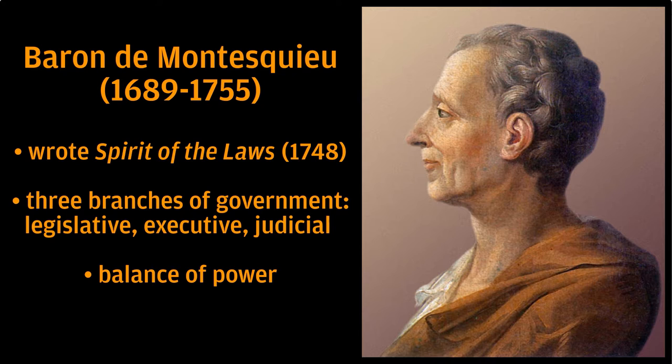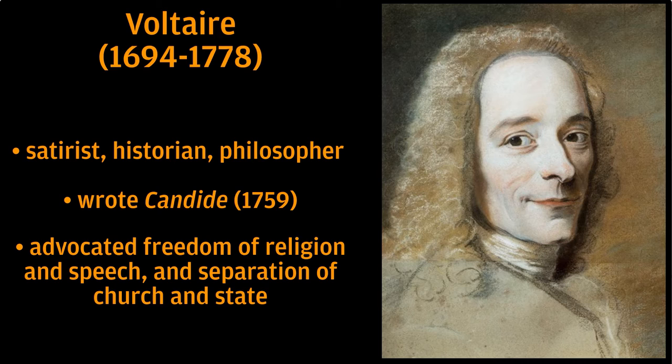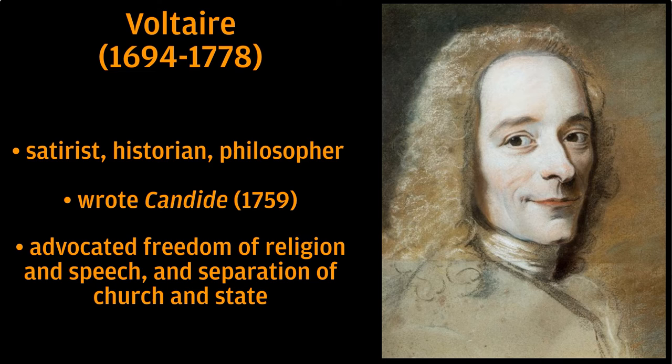Locke's ideas were extended by other influential Enlightenment thinkers, in particular three French philosophers. Montesquieu argued that government should be divided into legislative, executive, and judicial branches, and be guided by a system of checks and balances, ensuring that no one branch was more powerful than another. Voltaire wrote numerous essays, plays, and political satires targeting the king, the French state, and the Catholic Church. And Rousseau, whose notion of a general will became a cornerstone of any democratic claim to political legitimacy.